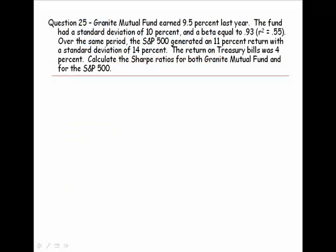Granite Mutual Fund earned 9.5% last year. The fund had a standard deviation of 10% and a beta equal to 0.93. The R-squared for that regression was 0.55. Over the same time period, the S&P 500 generated an 11% return with a standard deviation of 14%. The return on Treasury bills was 4%. Calculate the Sharpe ratios for both the Granite Mutual Fund and for the S&P 500.